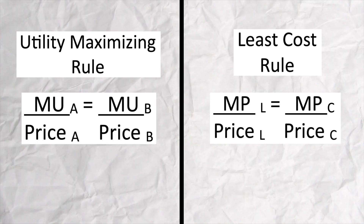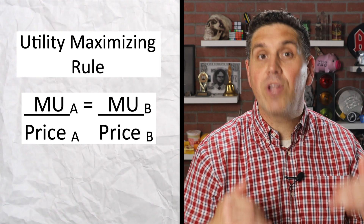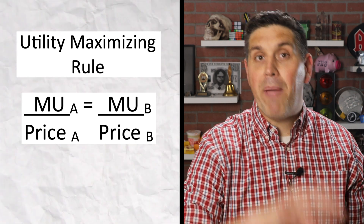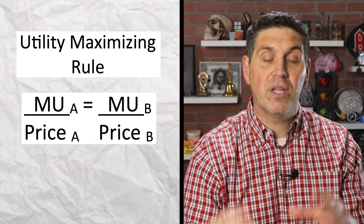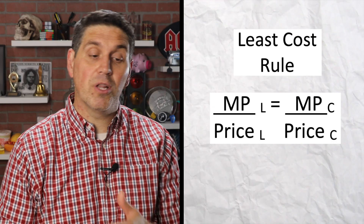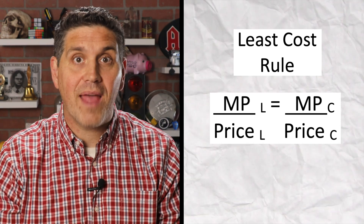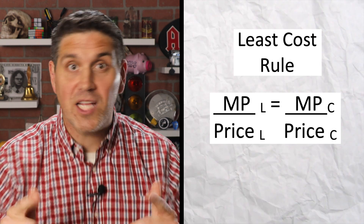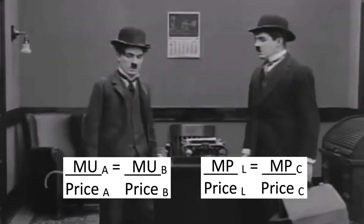There's another set of mirrored concepts — one in unit one and the other all the way in unit five: the utility maximizing rule and the least cost rule. For utility maximizing, you calculate the marginal utility per dollar spent on a good, compare it to the marginal utility per dollar spent on another good, and keep buying until you run out of money, finding the right combination of two goods that maximizes utility. The least cost rule is the same idea, except you're looking at the productivity of two different resources — finding the right combination of workers and capital to produce the most output at the lowest cost. Two different concepts, but the equations are mirrored.